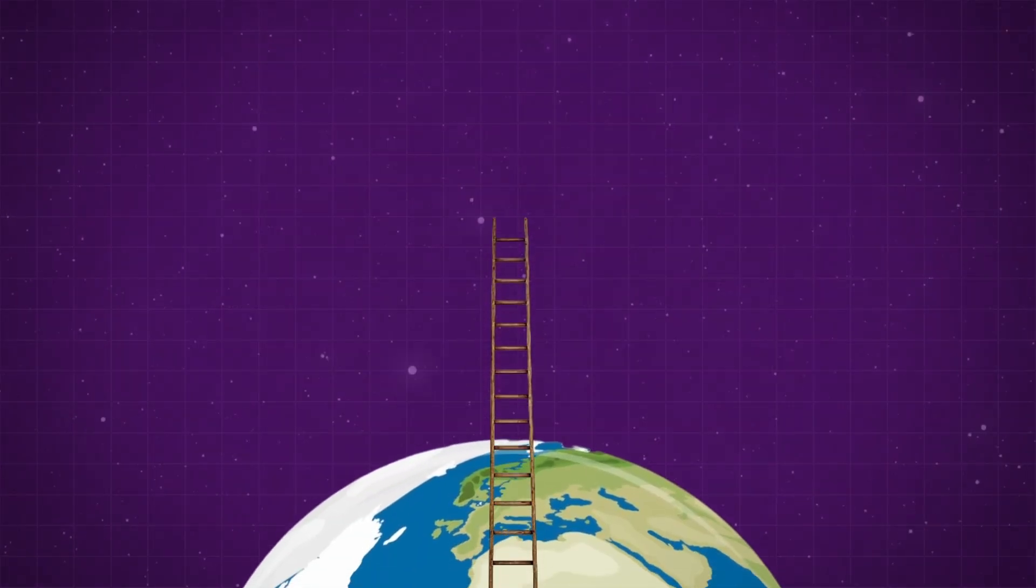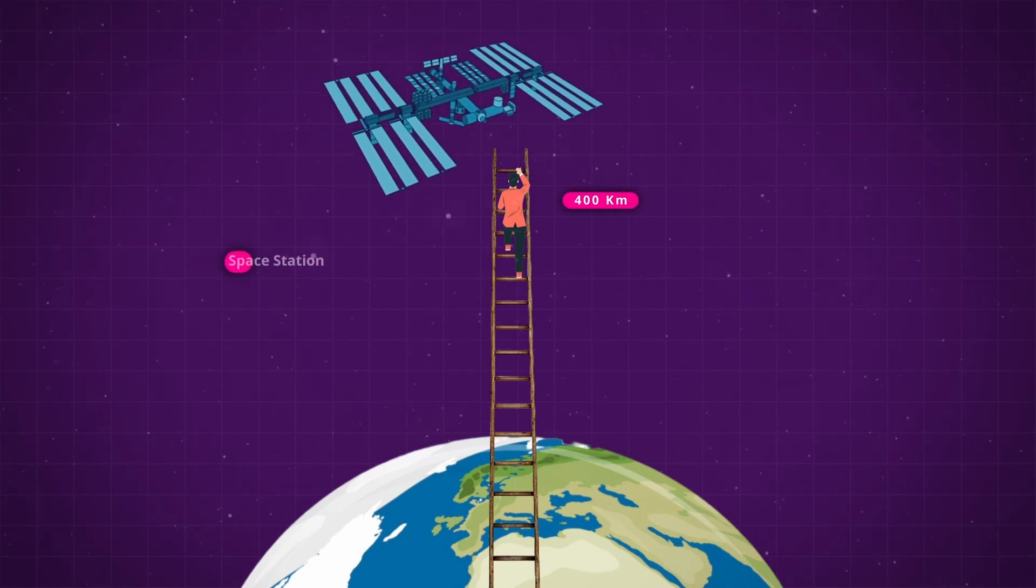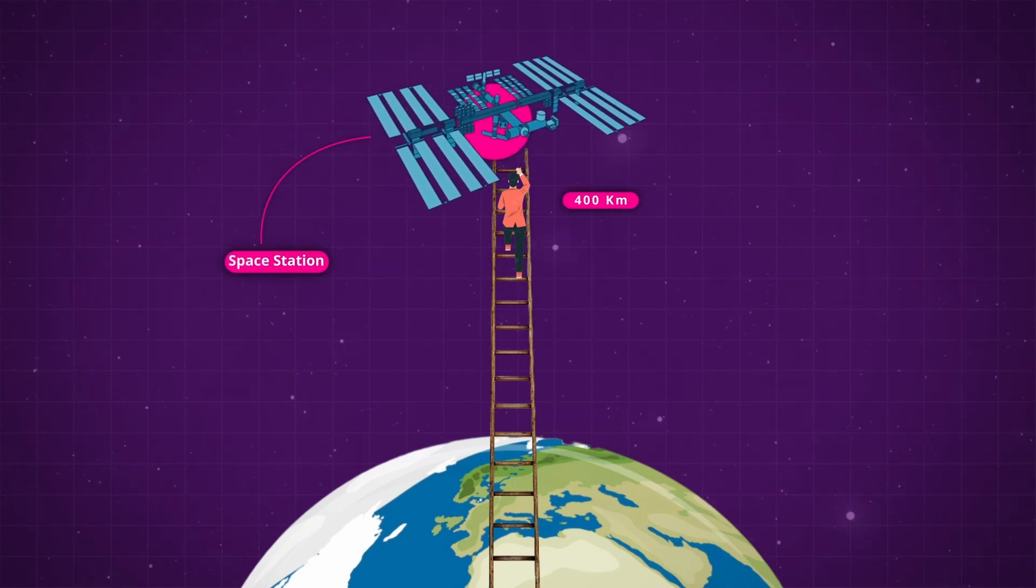In fact, if you were to climb a ladder straight up into the sky all the way to a height of 400 kilometers, which is the altitude of the International Space Station, you would still be experiencing 90% of the gravity that you left behind on the surface. And if you let go of that ladder, you would fall all the way back down.